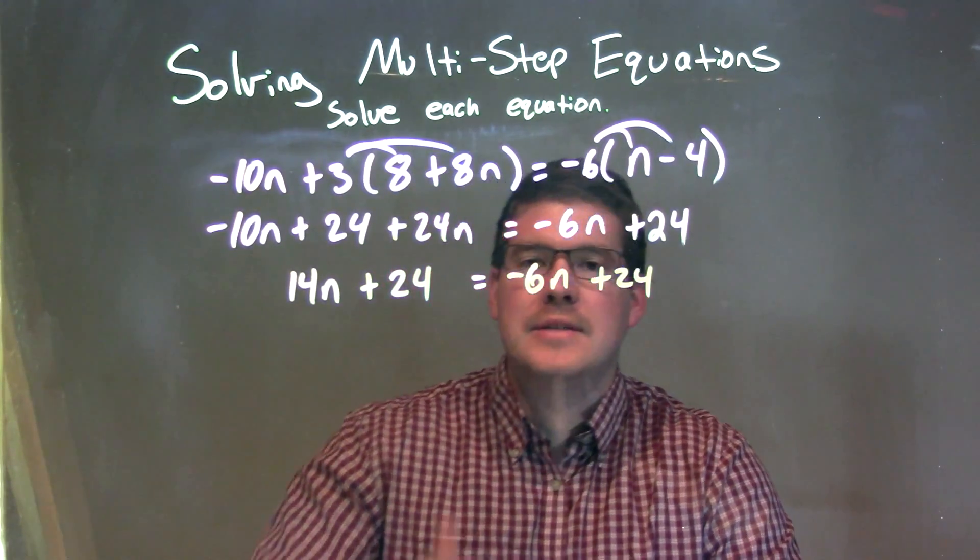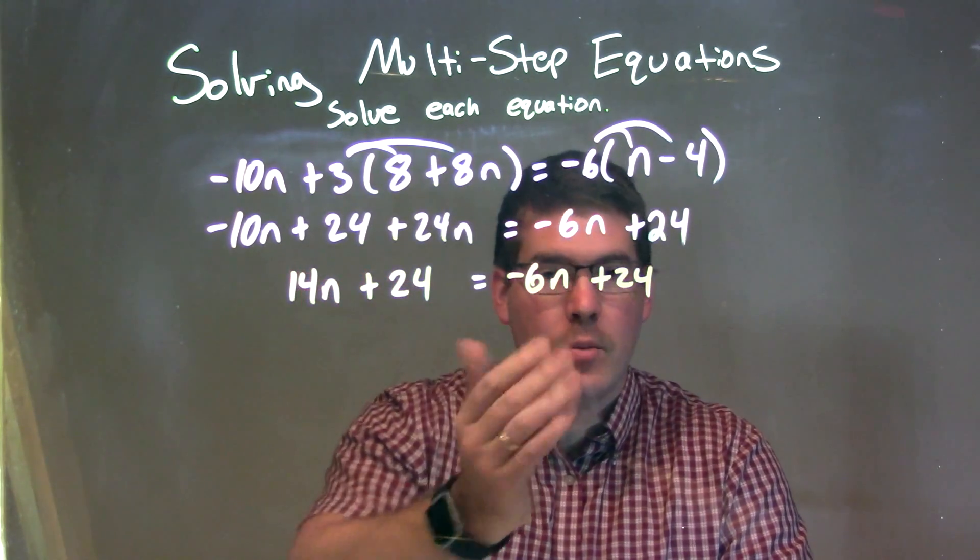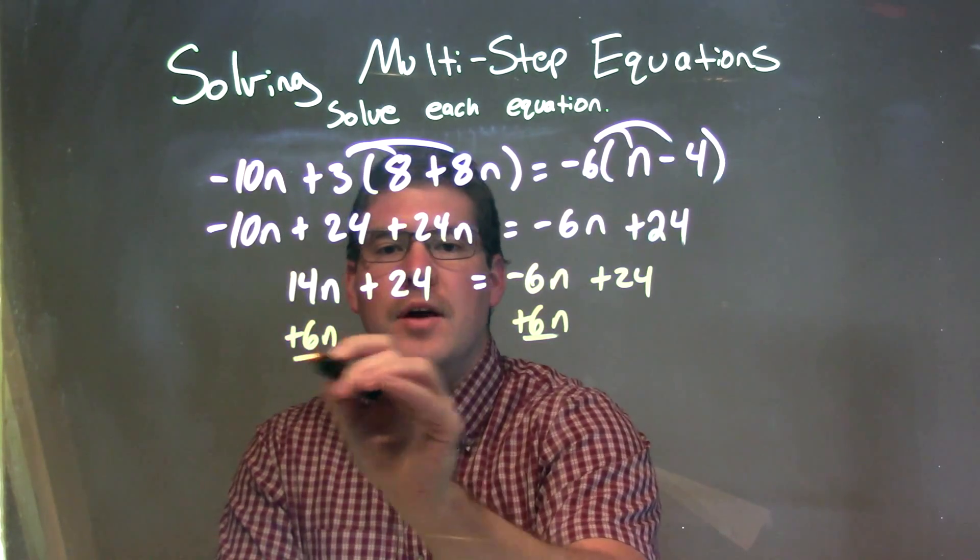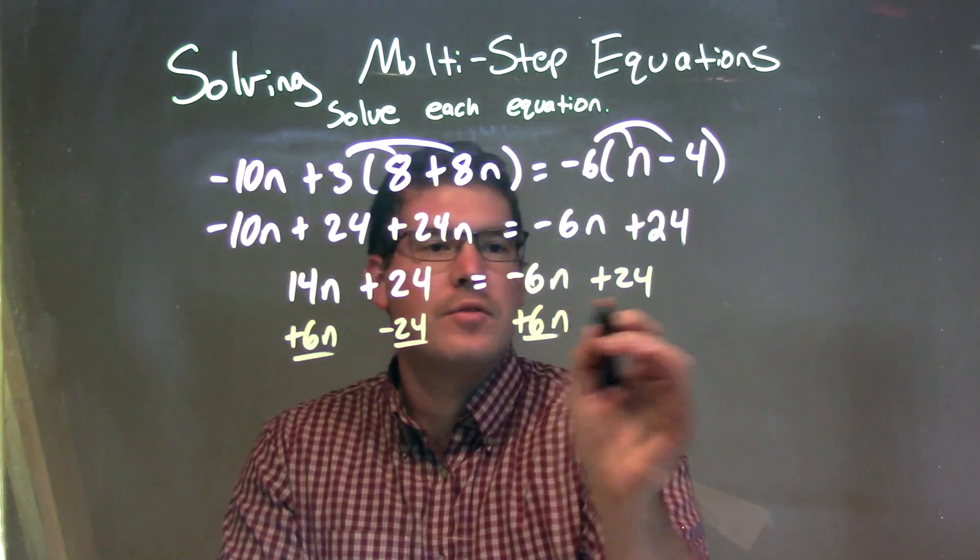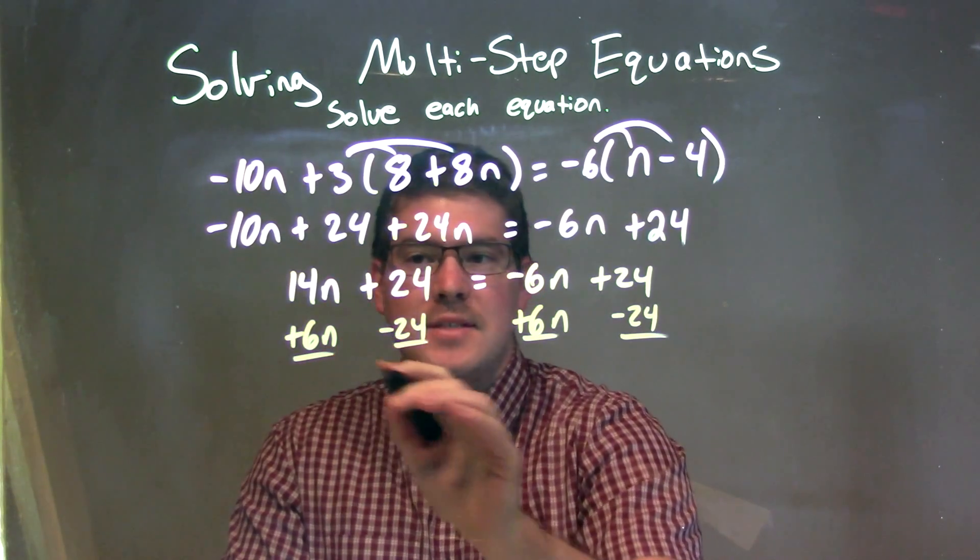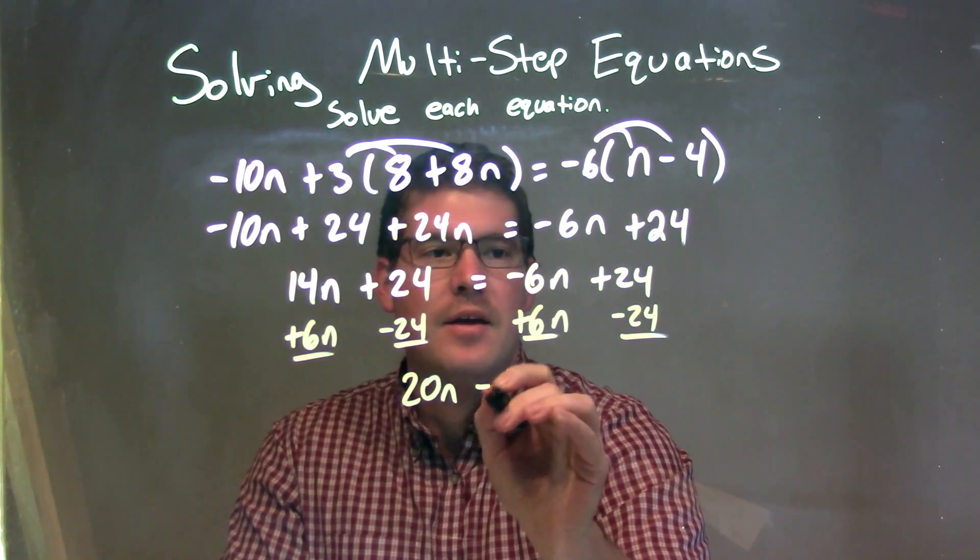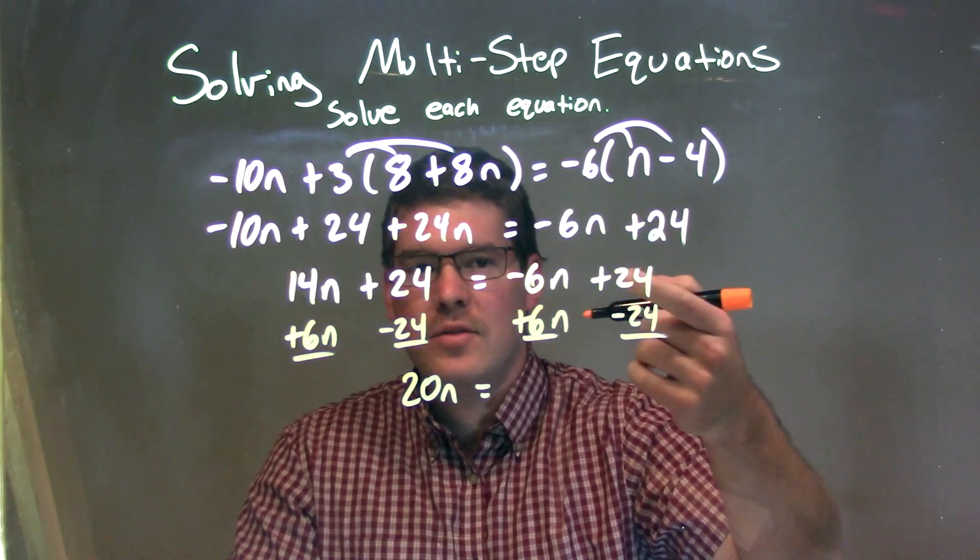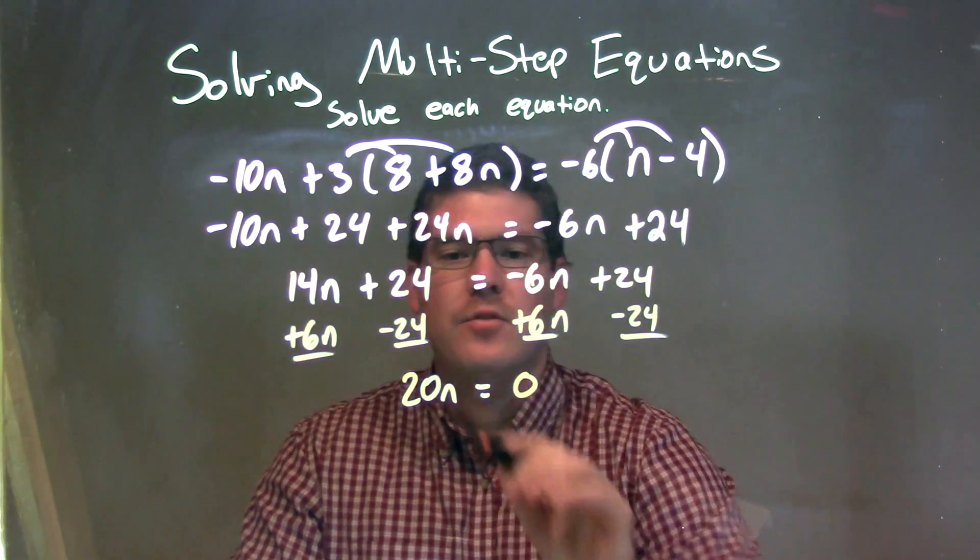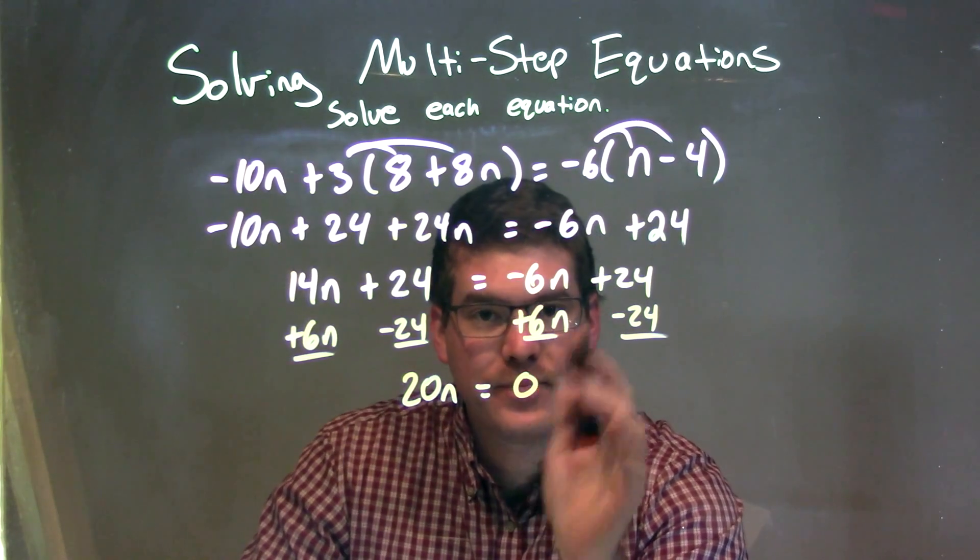So now what I'm going to do is bring my variables to the left and my numbers to the right. I'm going to add 6n to both sides, right here, and I subtract 24 from both sides. That leaves me with 14n + 6n, which is 20n, is equal to... now notice this, right? 24 - 24 cancels out. That's just 0. So we have 20n = 0.